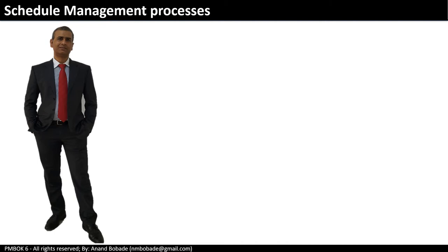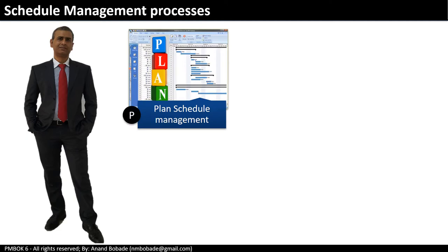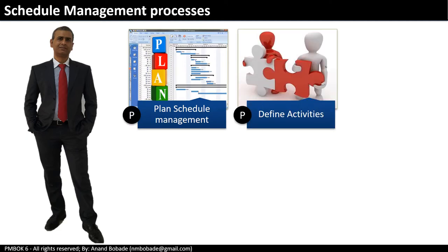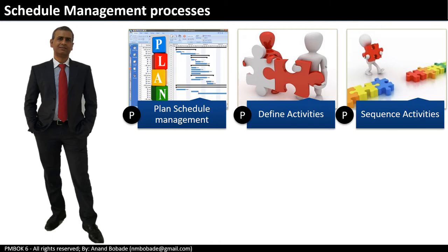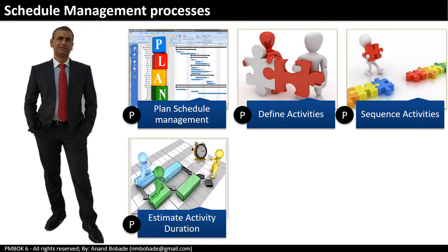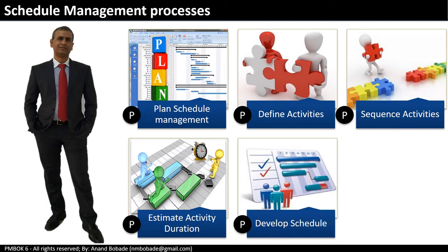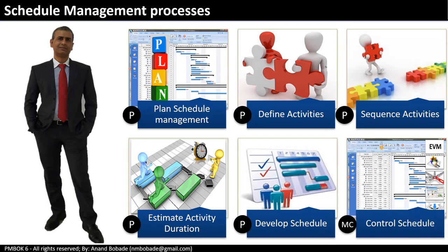Before getting into the details, let's take a look at the list of all six processes in schedule management. We have Plan Schedule Management, Define Activities, Sequence Activities, and we are currently learning the Estimate Activity Duration process. After this, we still have Develop Schedule and finally the Control Schedule process.